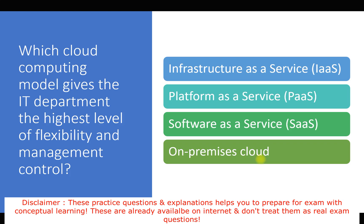In IaaS, we have control from the OS up to the application level. In PaaS, we get access starting from the runtime — we can write and deploy code but don't control the OS. In SaaS, we access software through licensing, like a Gmail account — we just use username and password with no control over the underlying infrastructure.